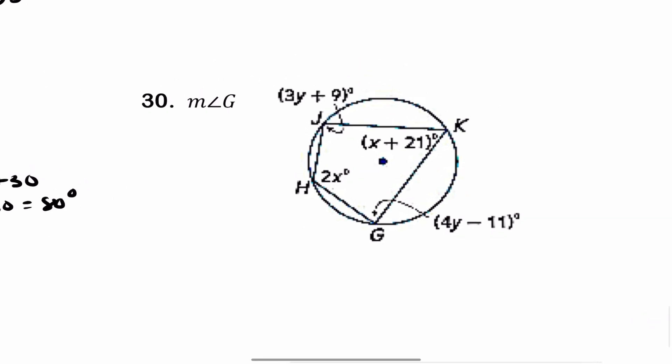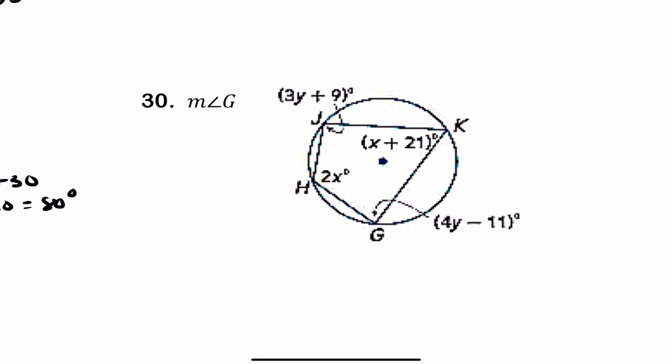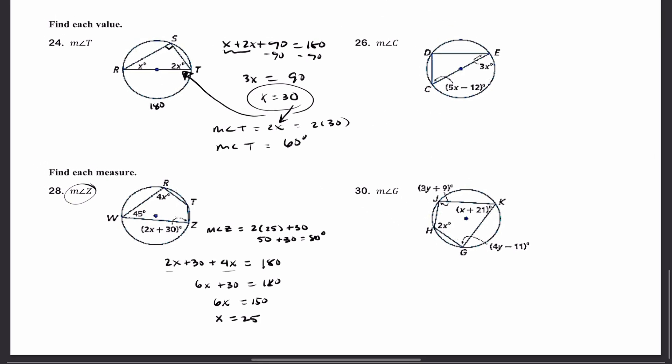For number 30, do the same thing. J and G are opposite angles, and H and K are opposite angles. Go ahead and apply the same approach. Hopefully this video helps.